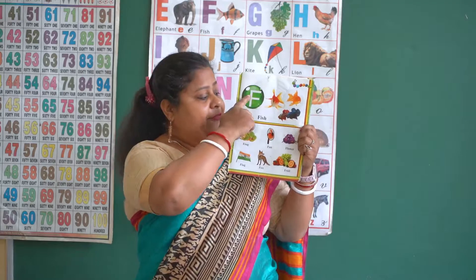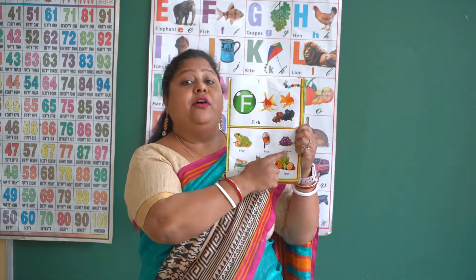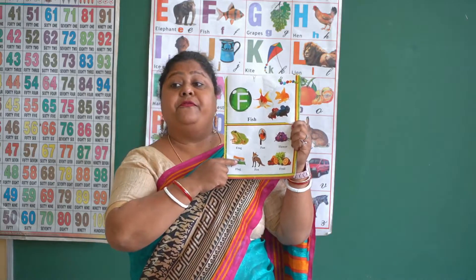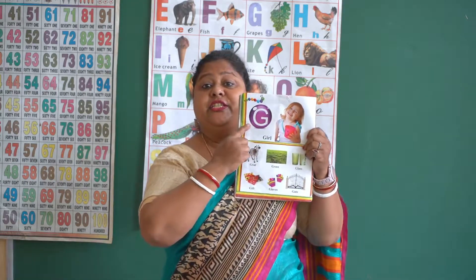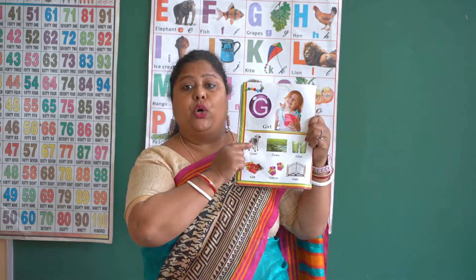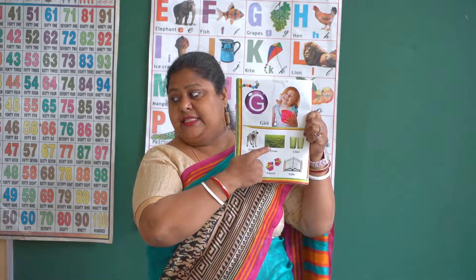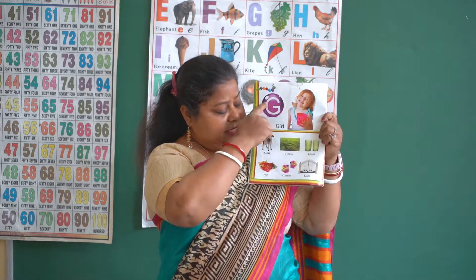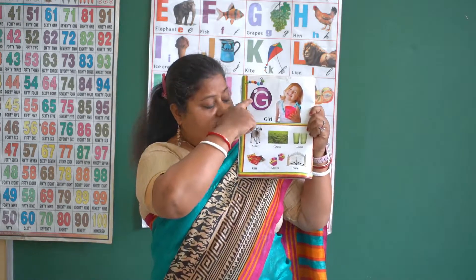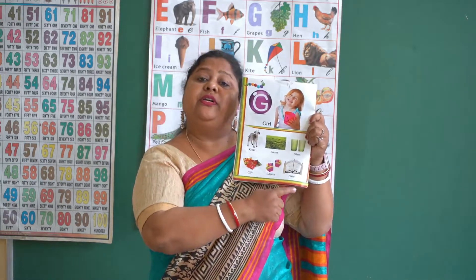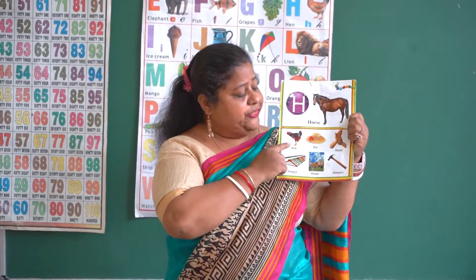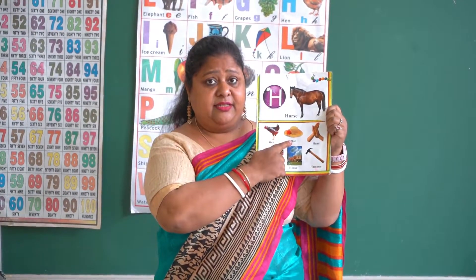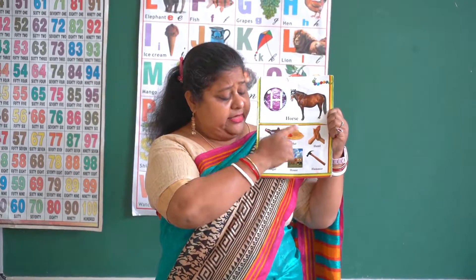F for fan, F for flower, F for flag, F for fox, F for fruits. Next page — G for goose, G for grass, G for glass, G for gift, G for gloves, G for gate.